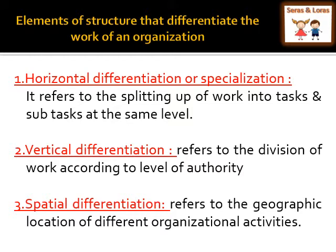All the employees working at the horizontal level will have the same qualification — that is known as horizontal differentiation or specialization. Vertical differentiation refers to the division of work according to the level of authority. It comes from the top to bottom: the top level people have higher authority, coming down to the lower level people at the bottom. This vertical type of classification is known as vertical differentiation. Spatial differentiation refers to the geographical location of different organizational activities — depending upon the geographical location of each department, it is known as spatial differentiation.